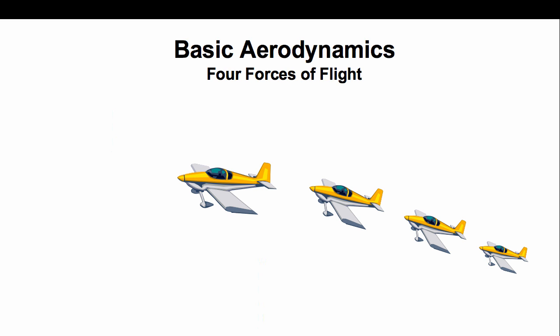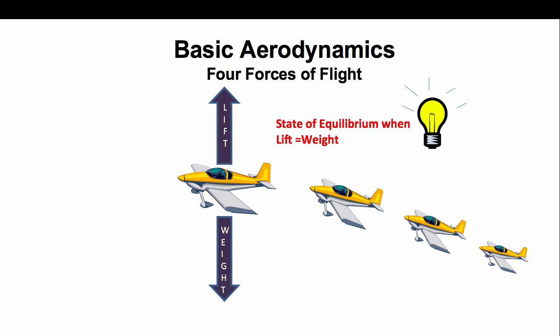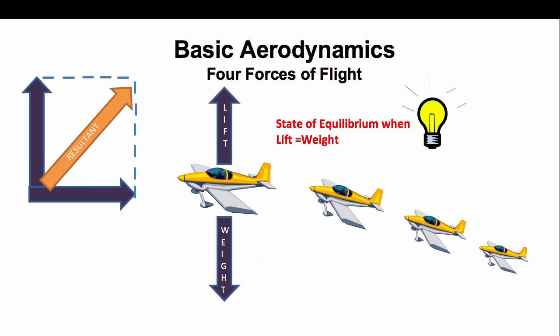By now we have established that lift is the key aerodynamic force. Please remember that when weight and lift are equal, an airplane is said to be in a state of equilibrium — that means lift equals weight. Also, when vertical and horizontal forces are applied, as shown on the left of this slide, the resultant force acts in a diagonal direction. Therefore, the resultant of two opposing forces which are equal in magnitude is zero.